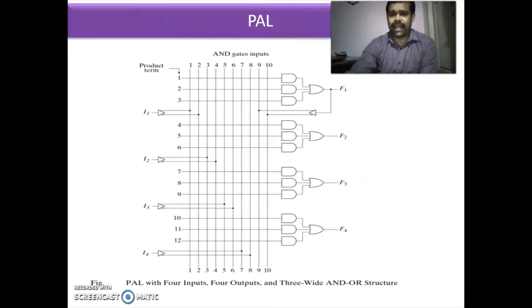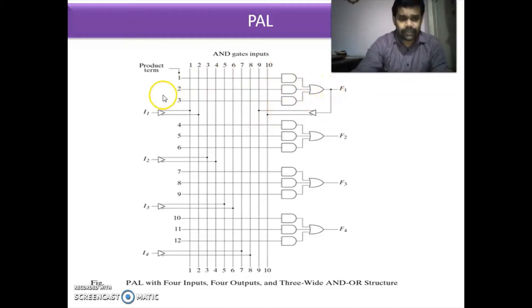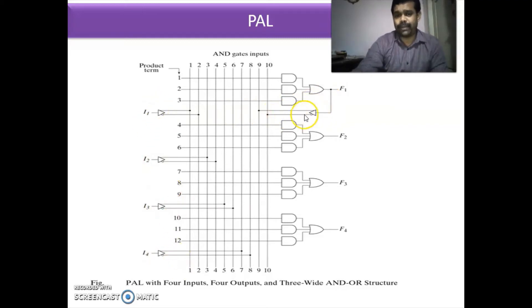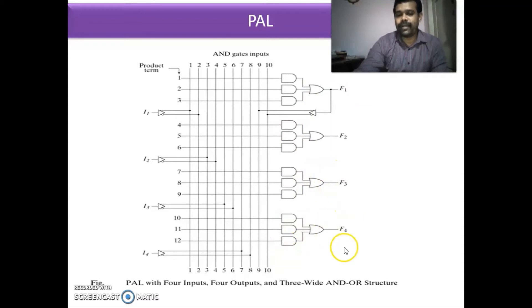This is a diagram of PAL having four sections. Each section has three AND gates and one fixed OR gate. The output of the first section is fed back to the input. It has four inputs — A, B, C, D — plus one feedback input. Each section has three AND gates and one OR gate, and there is an inverter buffer gate on the inputs.